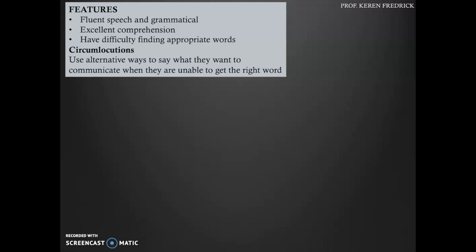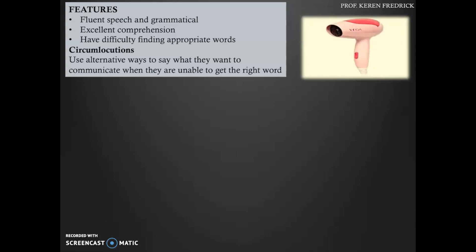For example, they might use definitions or explanations of the word they're trying to talk about. Say it's a hair dryer - the word for this device you see on the screen is hair dryer, but they may not be able to get the appropriate word. So they might define it like 'that thing that can make wet hair dry.' That is basically circumlocutions that individuals with anomia incorporate.